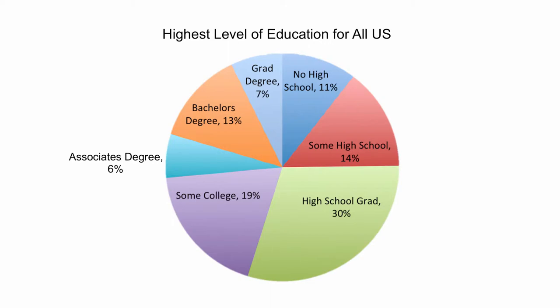And while pie charts are common, they have some problems. The first is that they indicate values through angles and areas of circles, both of which can be very hard to read. These two sets of charts demonstrate the problem.